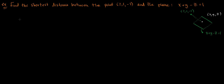Here's another example we can solve using Lagrange multipliers. We want to find the shortest distance between the point and the plane x plus y minus z equals 1. So if this is our plane here, this is the point and we have a random point on the plane, called x, y, z. We want to find the shortest distance between this point and the plane.